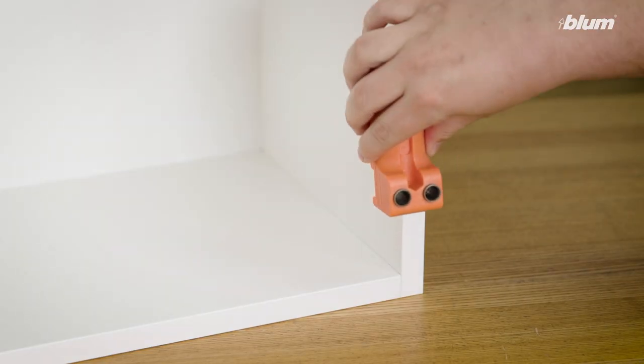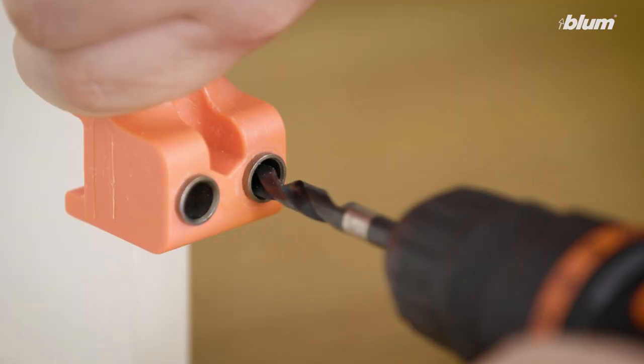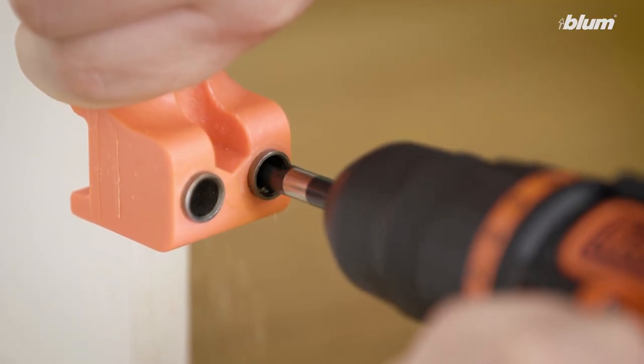Now, all I need to do is line up the Tip-On boring template along the edge of the cabinet where I made my mark earlier and drill.